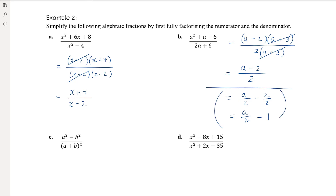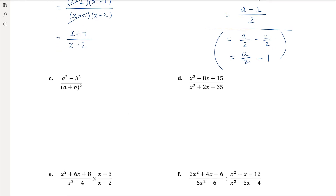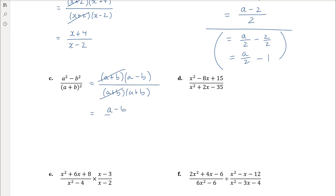Part c has a² − b² on top, which is a difference of two squares factorising to (a + b)(a − b), and (a + b)² on the bottom — which is already factorised as (a + b)(a + b). Resist the urge to expand. The common factor of (a + b) cancels, leaving (a − b) over (a + b). There are no further common factors, so we're done.